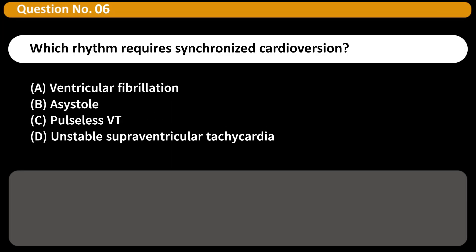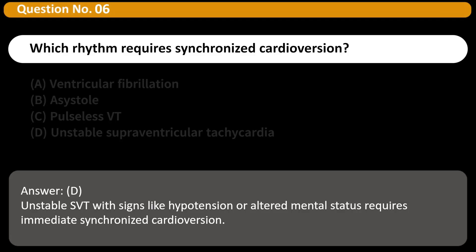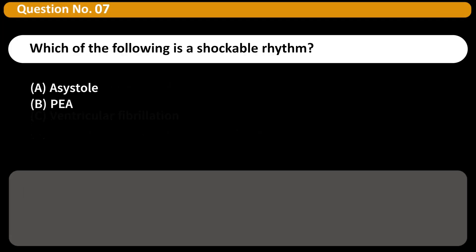Which rhythm requires synchronized cardioversion? A. Ventricular fibrillation. B. Asystole. C. Pulseless VT. D. Unstable supraventricular tachycardia. Answer: D. Unstable SVT with signs like hypotension or altered mental status requires immediate synchronized cardioversion.